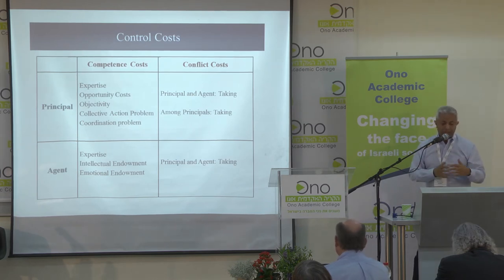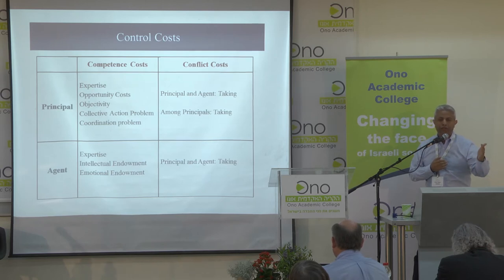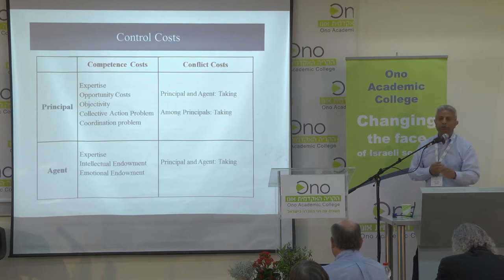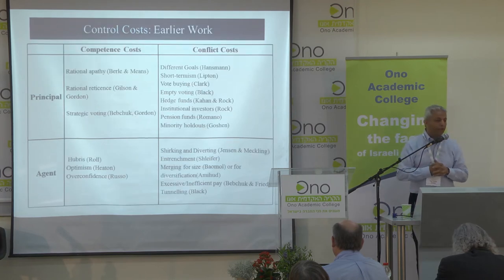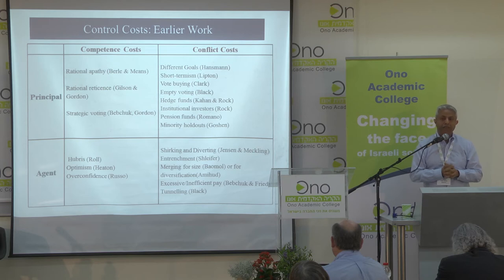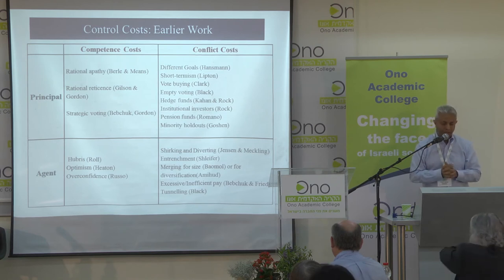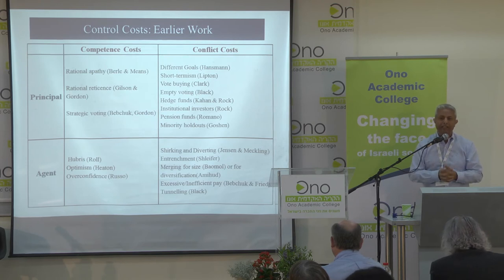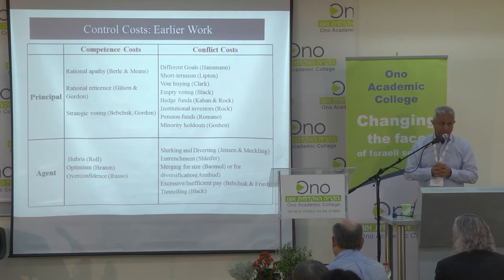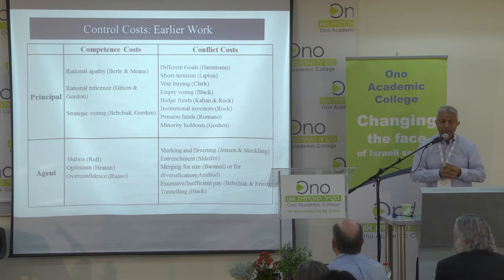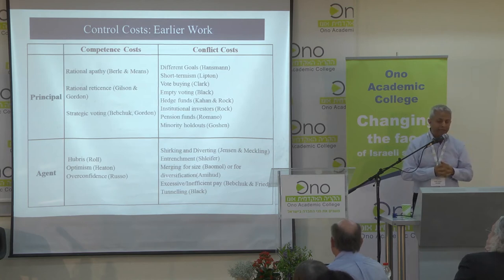If you keep all control rights in the hands of the principal, you will bear the cost of the two upper cells. Once you start delegating to the agent, you have the costs of the two lower cells. Jensen and Meckling covered the lower-right cell completely, defining conflict costs of agents. Many others have added elements. Conflict costs of the principal were also identified, most notably Henry Hansmann in his work on the ownership of the firm, and also Marty Lipton with short-termism.